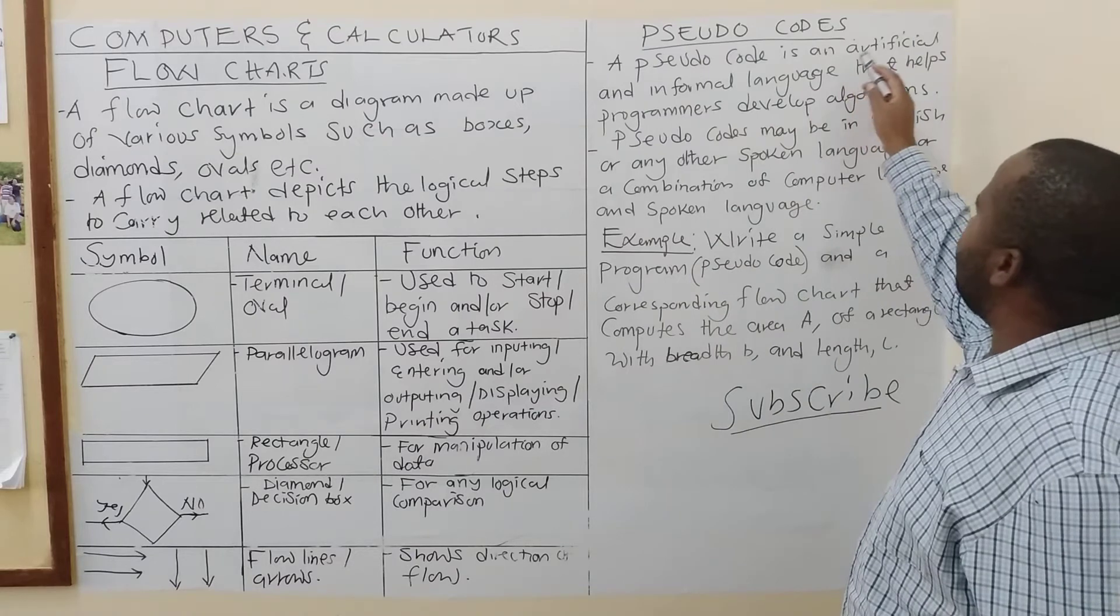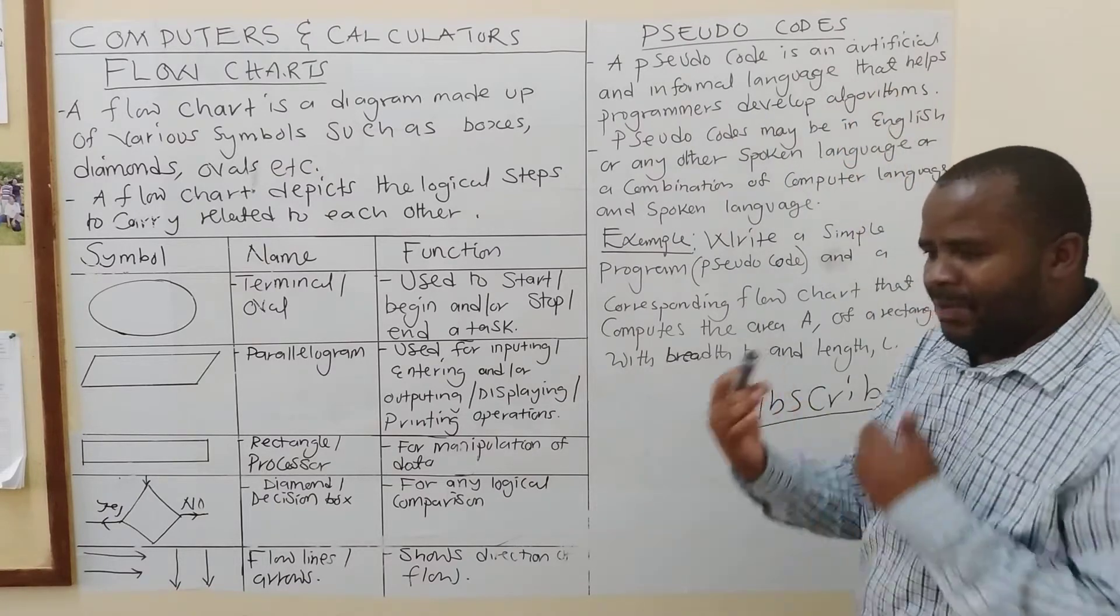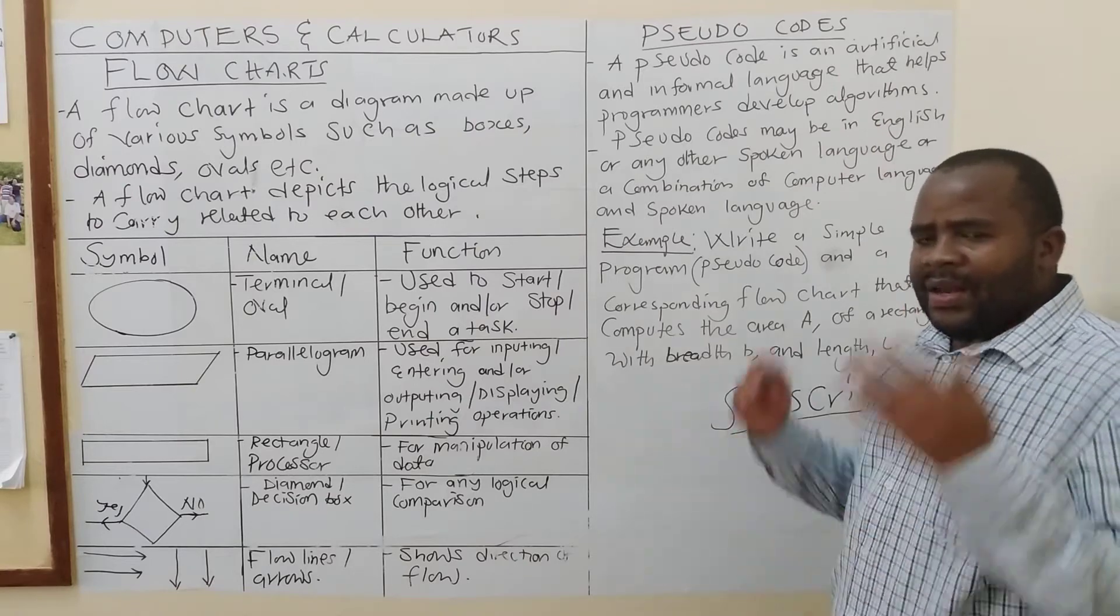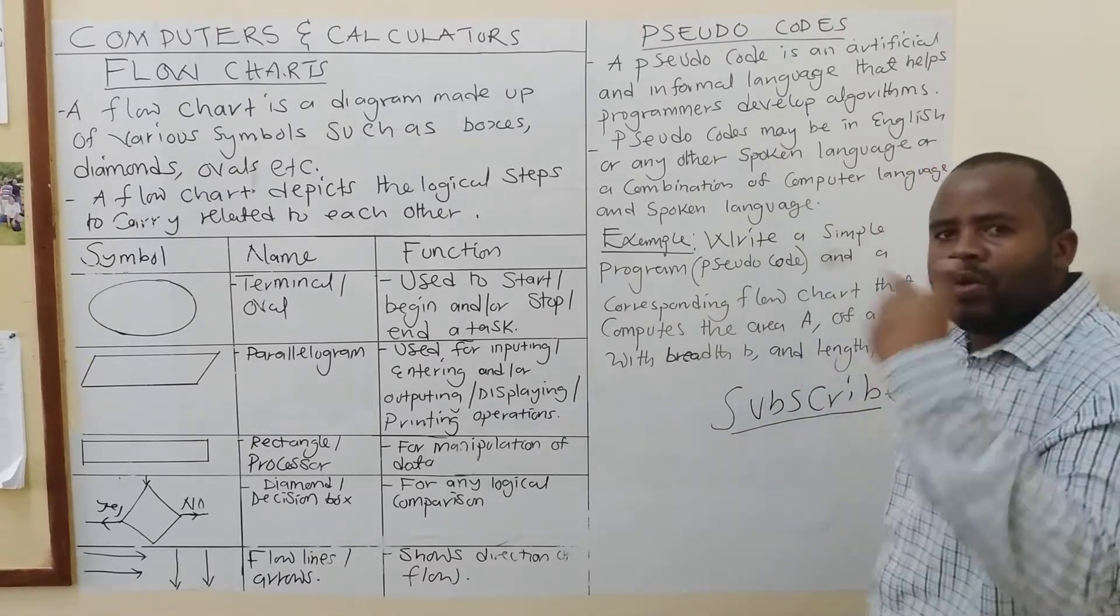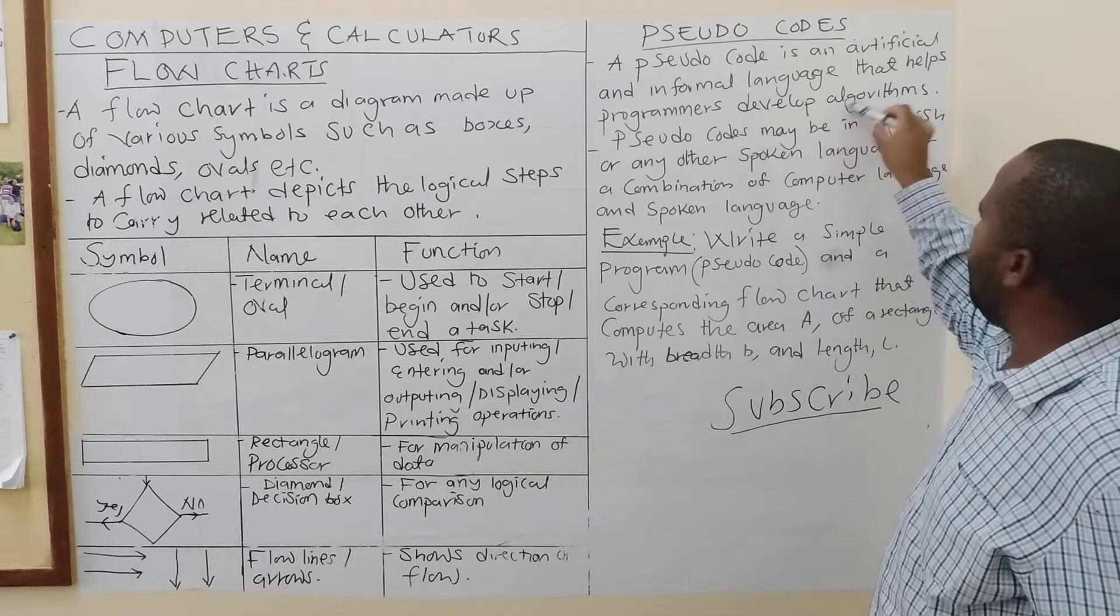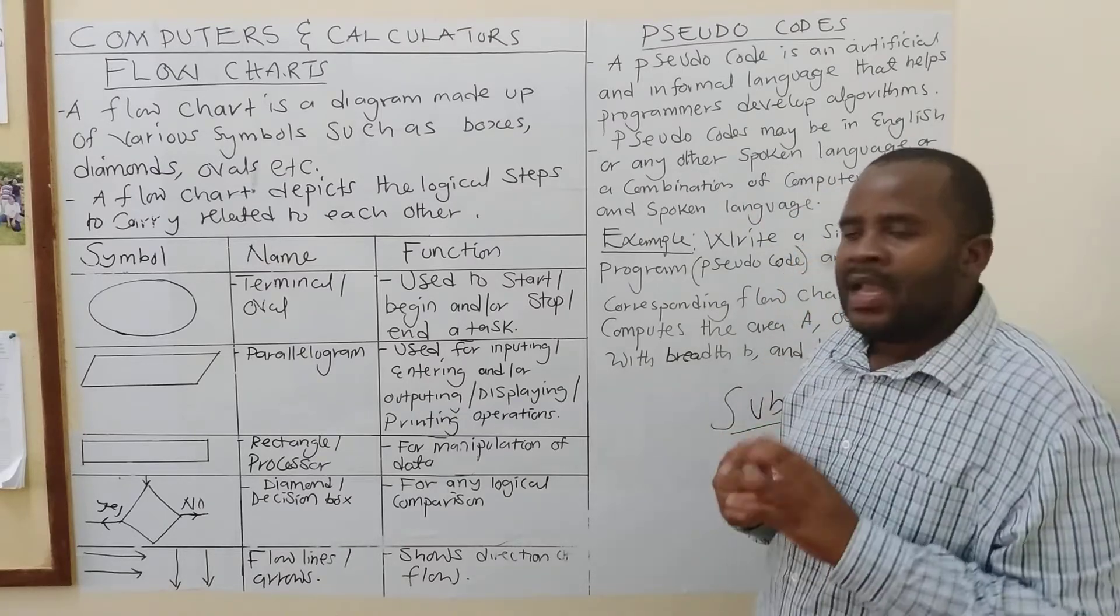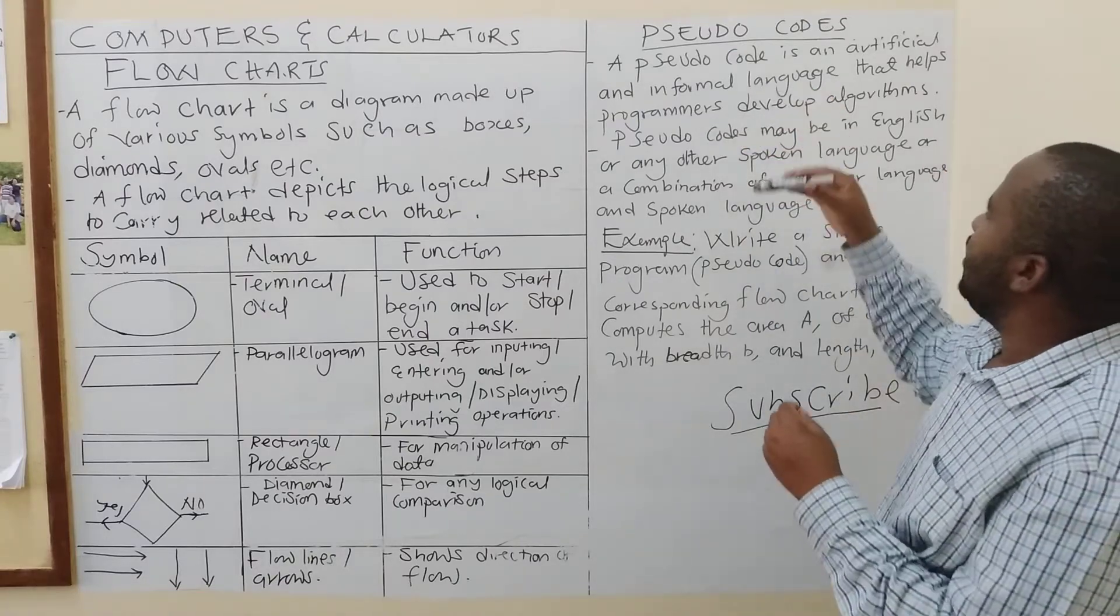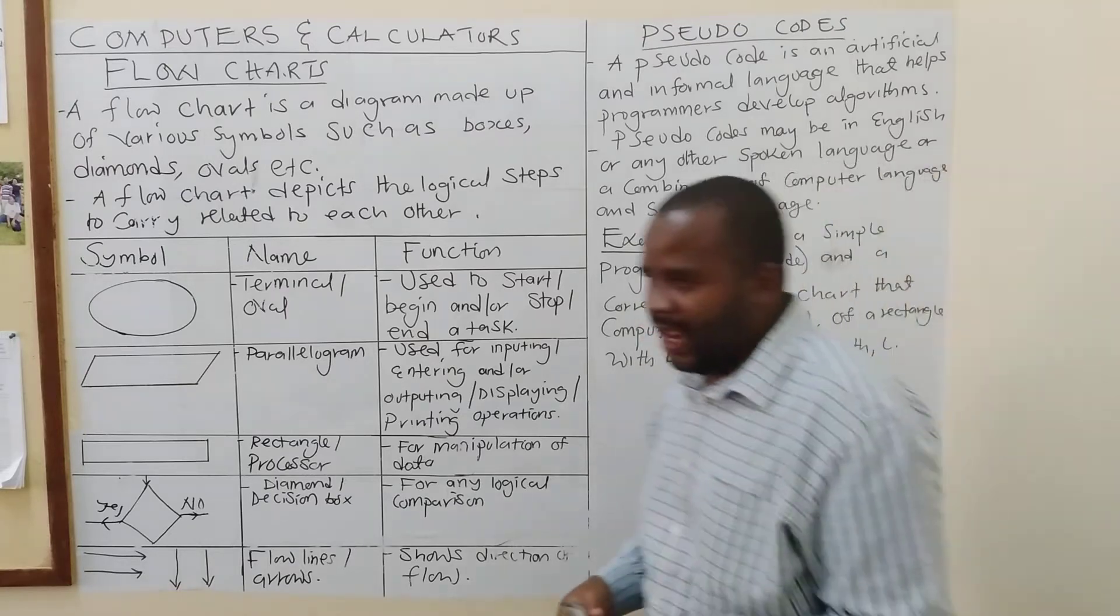We are saying a pseudocode is an artificial or informal language that helps programmers, the people that program, develop algorithms. Pseudocode may be in English or any other spoken language, or indeed, a combination of both computer language and it. So, in most cases, this could be written in a language such as English or a combination of both.